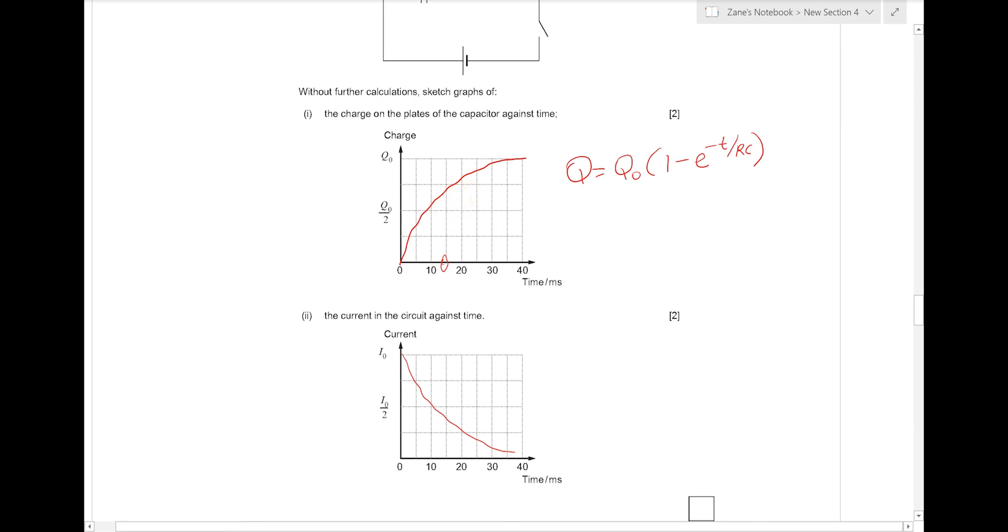For the current against time, the current decreases as time goes by. The current is always described by the equation I equals I0 E to the minus T over RC. The current always starts high and gets lower and lower as it gets harder and harder for electrons to move from one plate of the capacitor to the other. And after a time constant, after again about 15 ms, we will be down to 37%, roughly speaking, of the original charge.